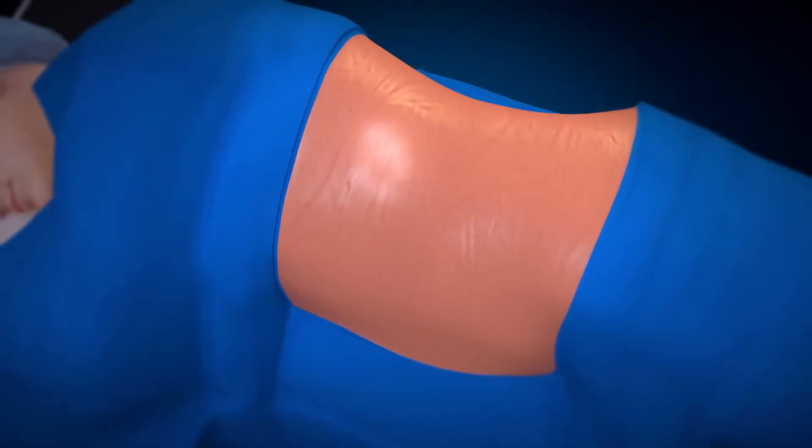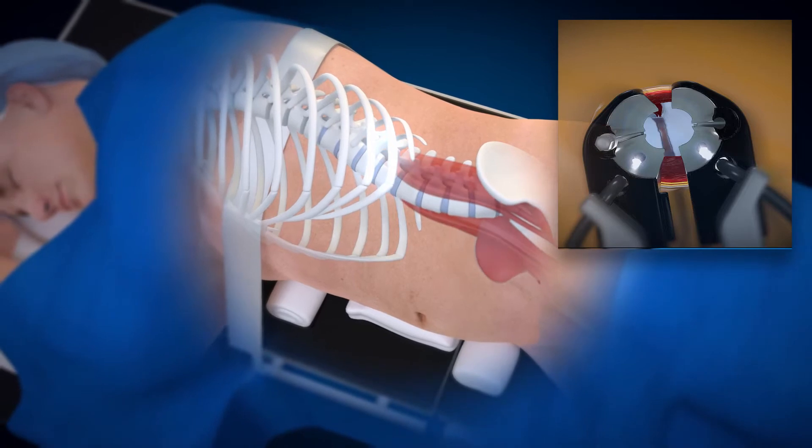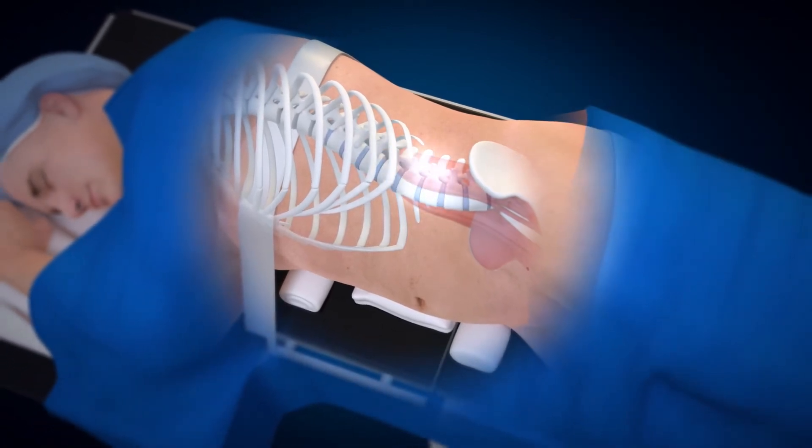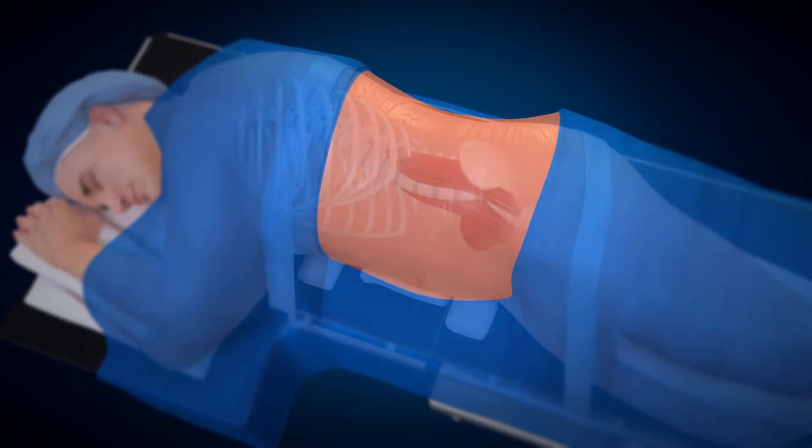The OLIF-25 procedure is a muscle-sparing approach through an oblique corridor to access multiple levels of the lower lumbar spine. When considering an oblique approach, we must consider the anatomy.